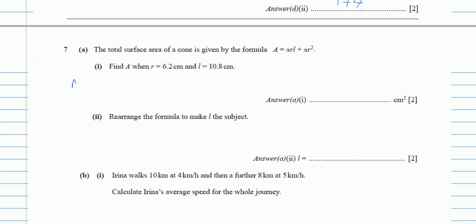So we say A equals π — instead of π you might use 3.142, so it's up to you, either use the π button or use this value. So it's π times r, which is 6.2, times l, which is 10.8, plus π times r squared, which is 6.2 squared.